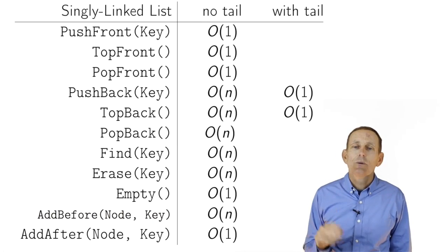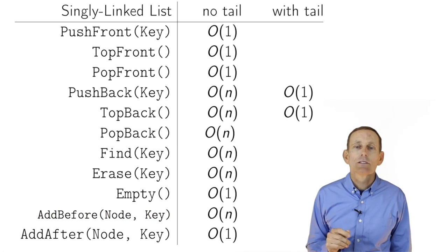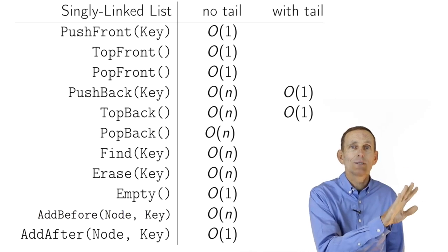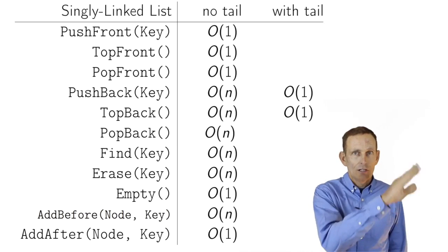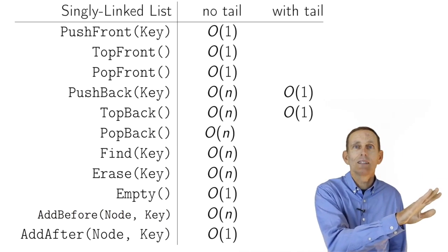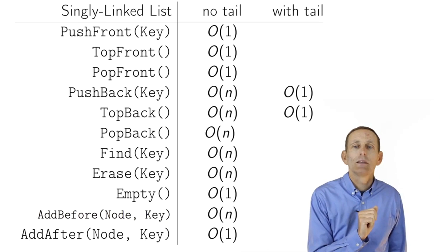So in a singly linked list, we saw the cost of things. Working with the front of the list was cheap. Working with the back of the list with no tail was all linear time. If we added a tail, it was easy to push something at the end, easy to retrieve something at the end, but hard to remove something at the end.